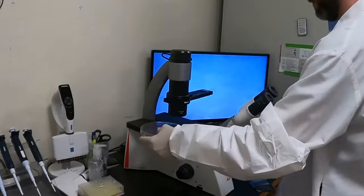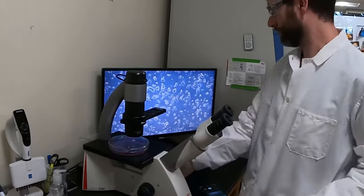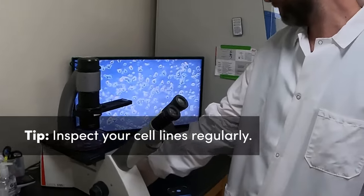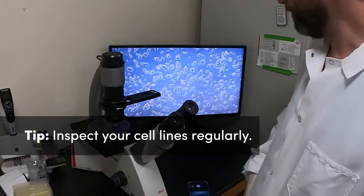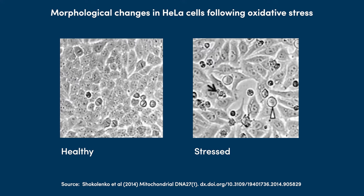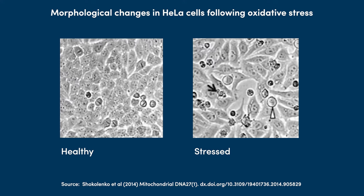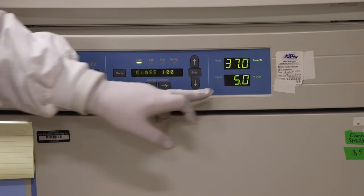This brings us to essential tip number two. Be proactive when it comes to the health of your cell lines. Visually inspect your cultures on a regular basis using a microscope with a phase objective. With experience, you'll learn to distinguish healthy versus stressed cells for different cell lines. How often your cells need to be split can vary depending on the cell line and growth conditions.